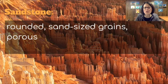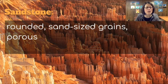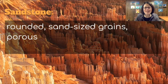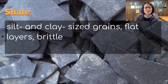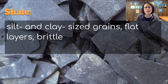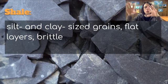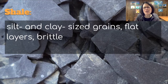Then there's sandstone, which you're probably quite familiar with: rounded, sand-sized grains that are very porous. This picture is from Bryce Canyon — you can see the sandstone and that it's broken up a bit; it's been weathered and there's sand below where it has fallen apart. There's also shale: silt and clay-sized grains in flat layers, very brittle. Shale is very common in our area — at Allen Park, the walls next to the creek are shale and break off very easily in very thin sheets.